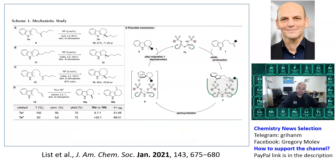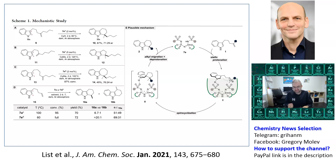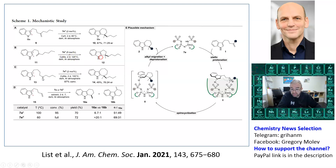I also like this work because they did mechanistic studies — it's always cool to see when scientists not only show what they can do but also understand why things work. Usually they do quantum mechanical calculations, but in this case it was really experimental. They moved the double bond from the fourth position to the third position and also to the fifth position. They showed that at the third position, even with five more percent of catalyst, there is no reaction at all — no cyclization occurs.